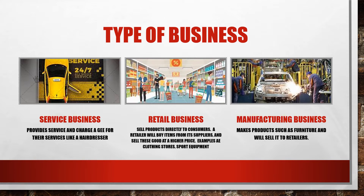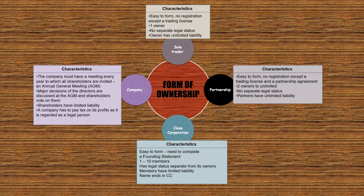You get different types of businesses: service businesses — for example a hairdresser who only provides a service; retail businesses — where they sell physical products to you; and manufacturing businesses — where they produce something from scratch and sell the final product, for example a car manufacturer.